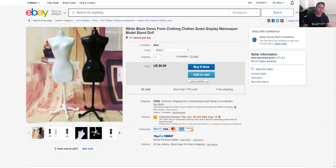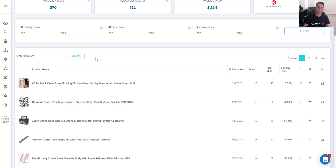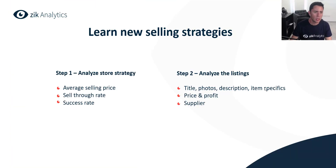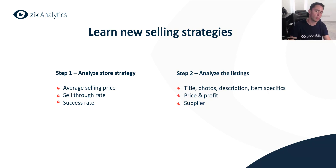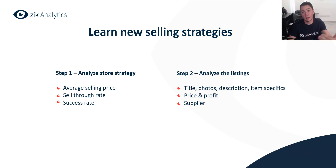Now moving to the second part: learning competitor selling strategies. Break it into two steps. Step one — analyze store strategy. Look at his average selling price, sell-through rate, success rate, profit margin, and the type of products he sells. What product research method does he use? Does he have a general store or a niche store? Is he focusing on high ticket items or scaling winning products? Every competitor has a completely different strategy, and that's why it's super important — you can learn and get ideas from successful sellers to implement in your own store.